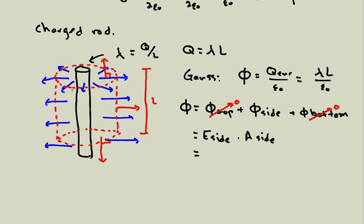The surface area of the side of a cylinder: if you imagine a can with a label, cut the label and unpeel it, you get a rectangle. That rectangle has a length equal to the circumference, 2πr, and a height equal to L. So my flux is the electric field times 2πr times L. Setting the two flux expressions equal to each other: E × 2πrL = λL/ε₀.